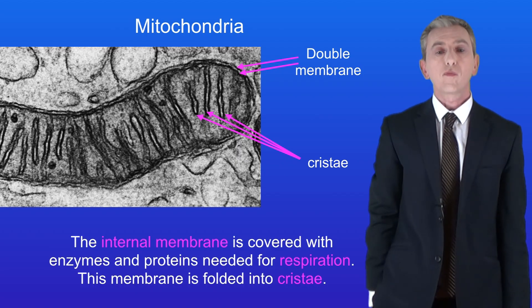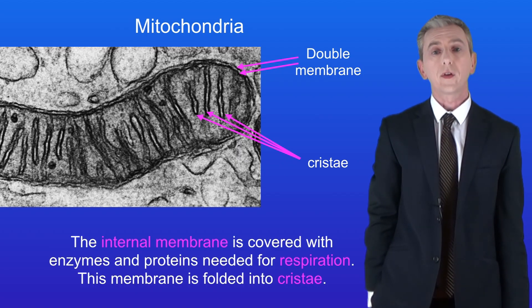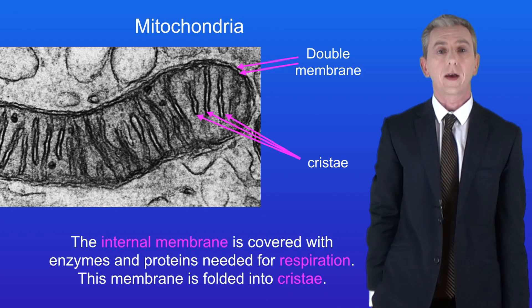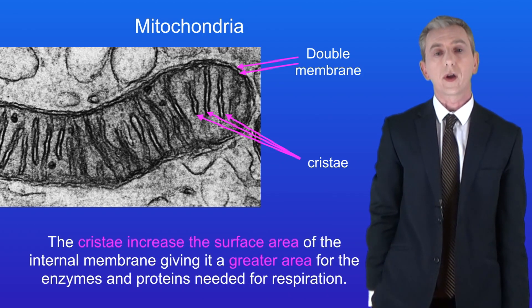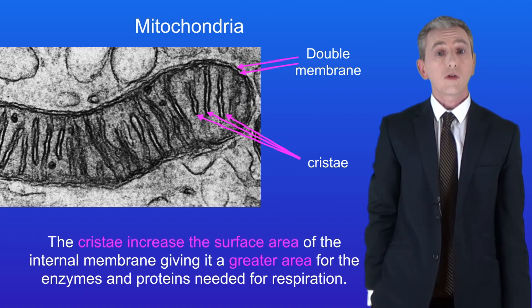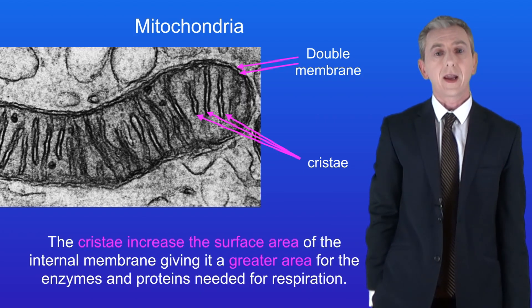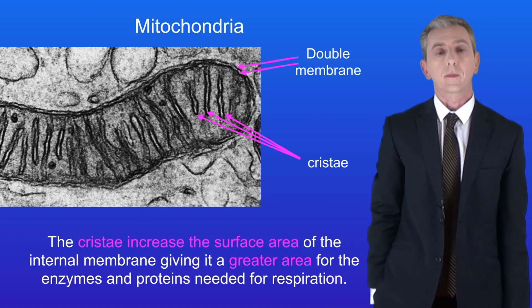This membrane is folded, and scientists call these folds cristae — you need to learn that. The cristae increase the surface area of the internal membrane, meaning there is an even greater area for the enzymes and proteins needed for respiration.